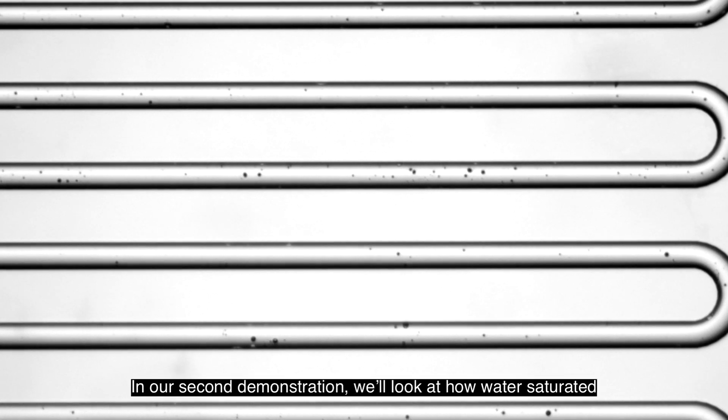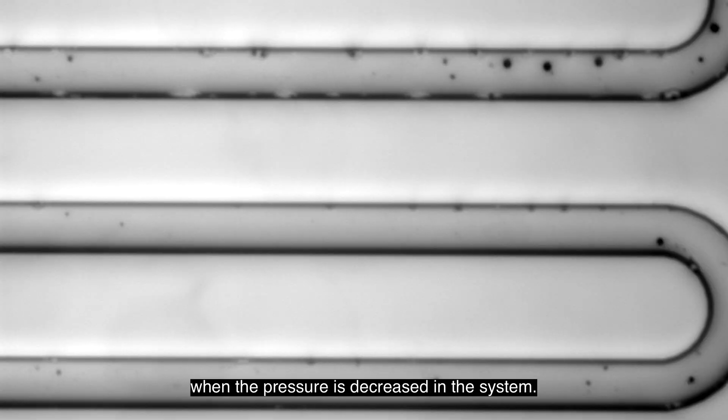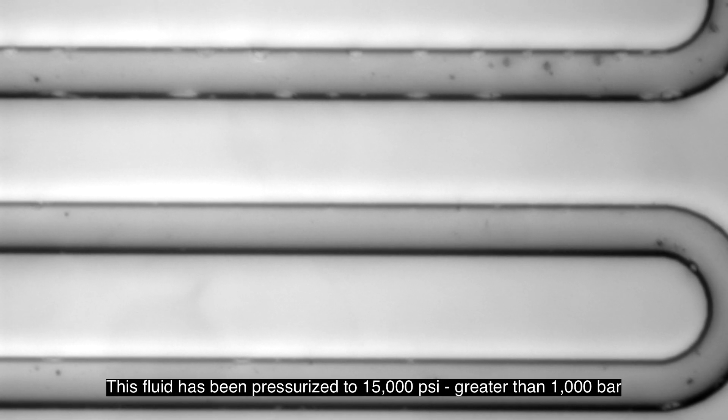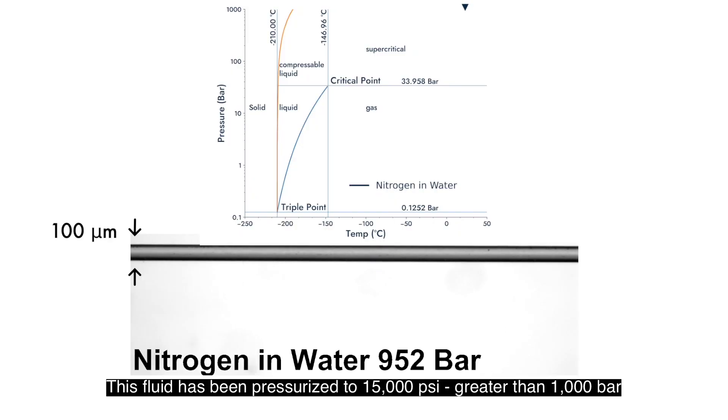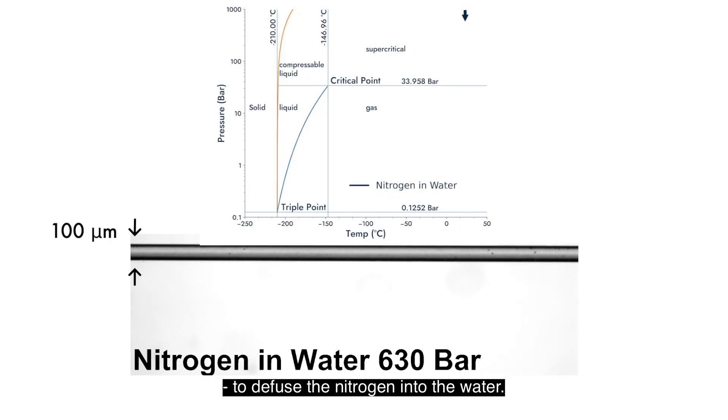In our second demonstration, we'll look at how water saturated with nitrogen reacts under extreme conditions when the pressure is decreased in the system. This fluid has been pressurized to 15,000 PSI, greater than 1,000 bar, to fuse the nitrogen into the water.